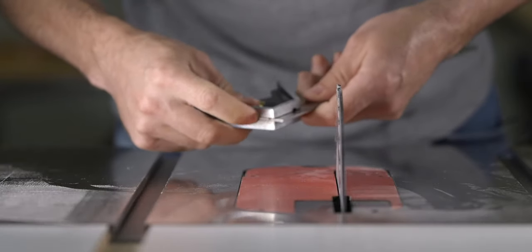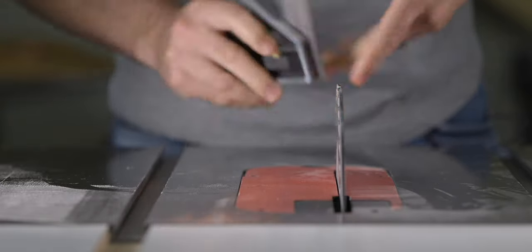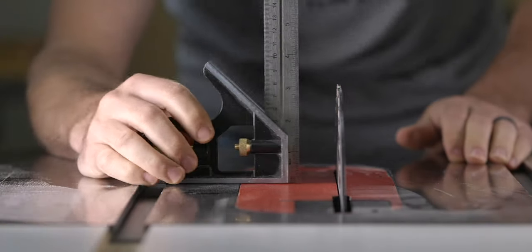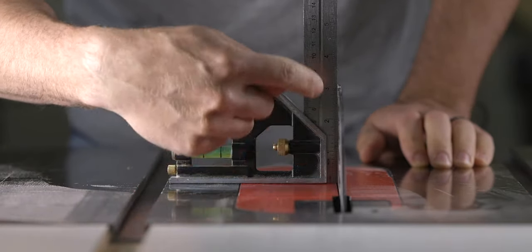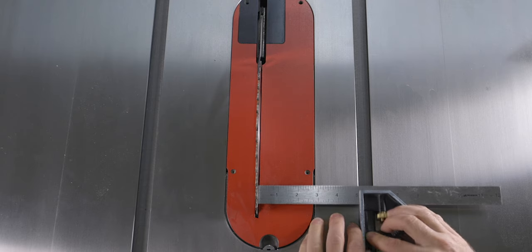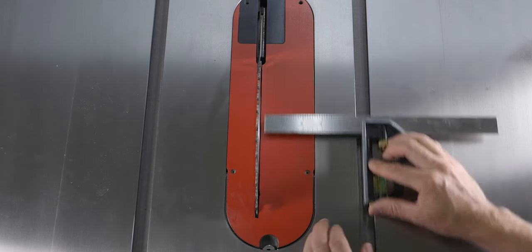With the blade of the combination square set to the end position, it then can be slid up to a fully raised table saw blade to verify that the blade is indeed at 90 degrees to the table. The combination square can also be used to check if the blade is parallel to the miter gauge slots, which is very important to check and adjust if needed.